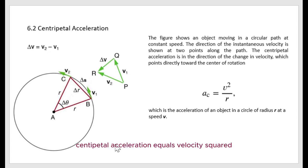Centripetal acceleration equals velocity squared divided by radius r, which is the acceleration of an object in a circle of radius r at velocity v.